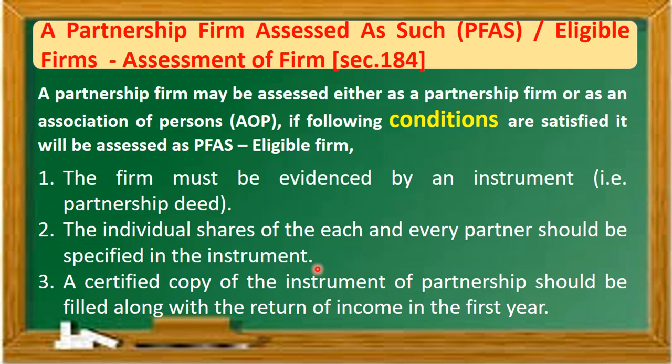For example, there are three partners — A, B, and C — in the firm. Each partner's individual shares and liabilities must be clearly specified in the instrument. A certified copy of the instrument of partnership deed should be filed along with the return of income in the first year.